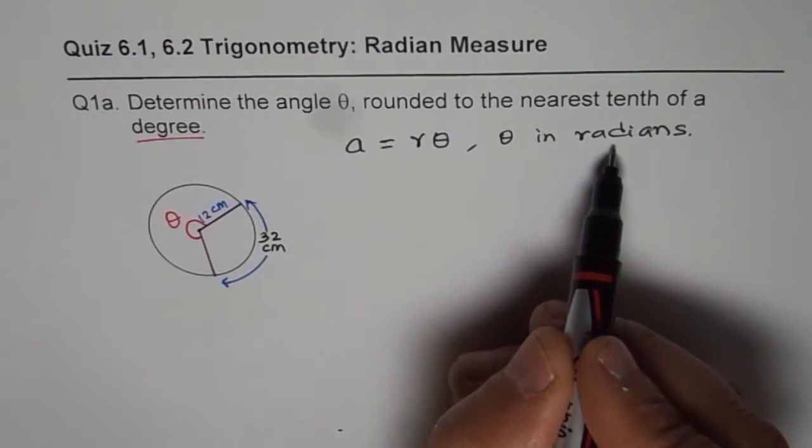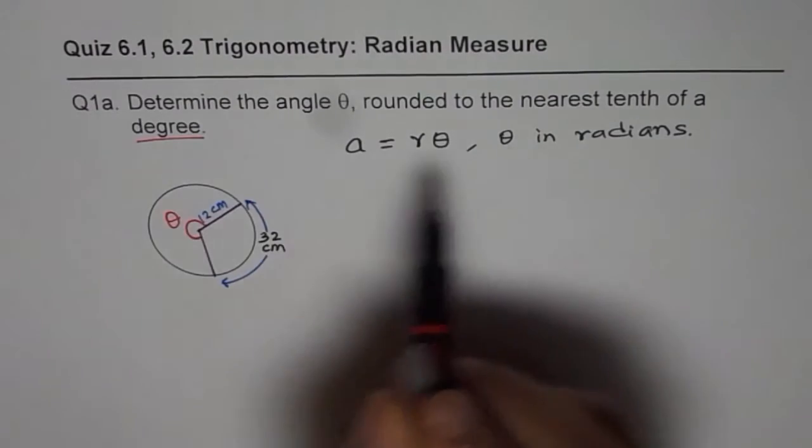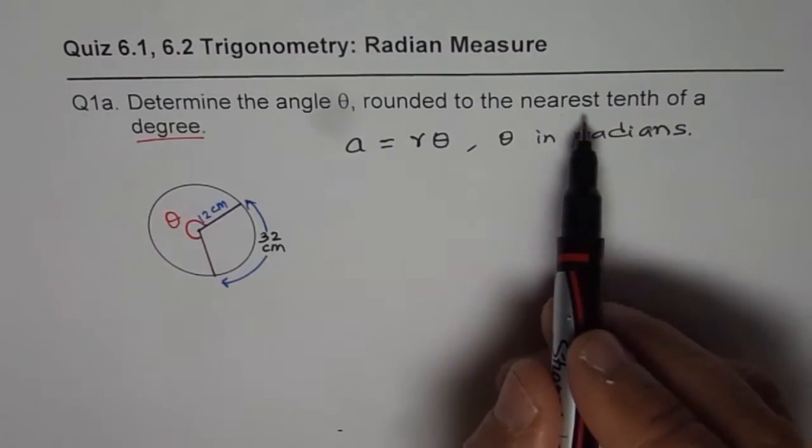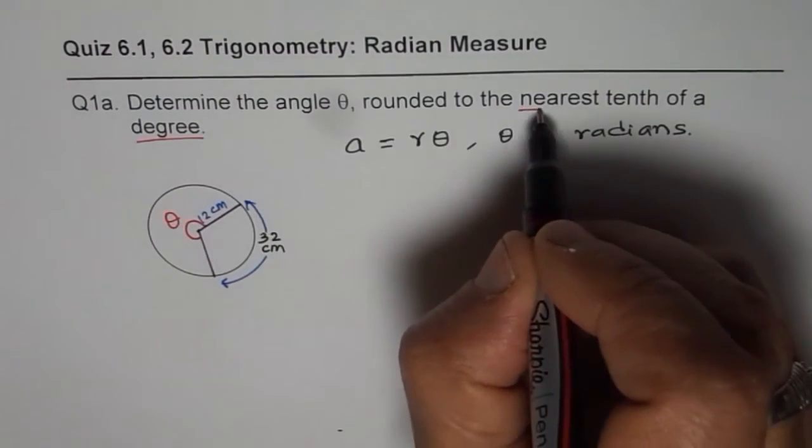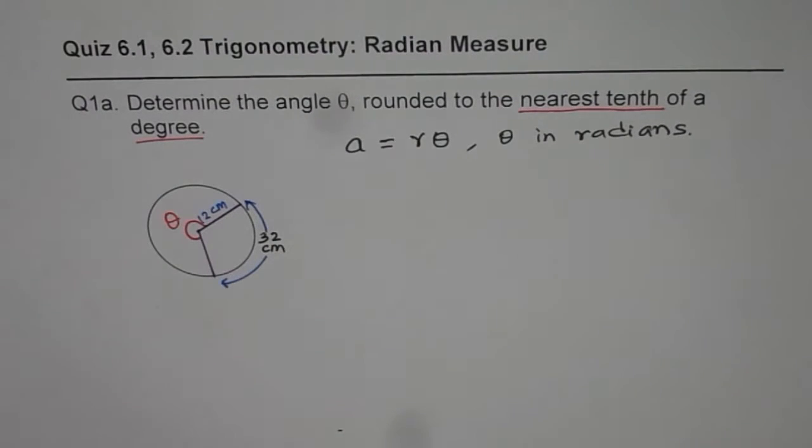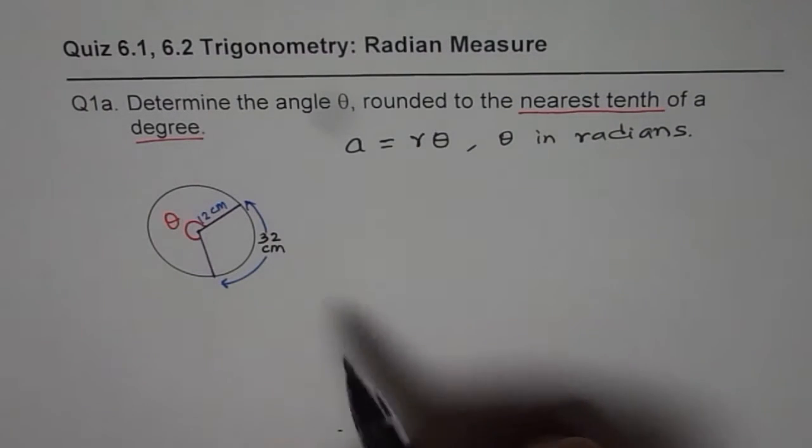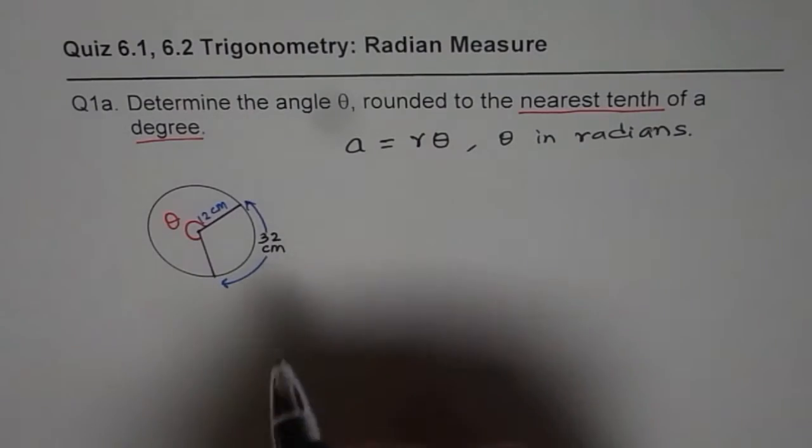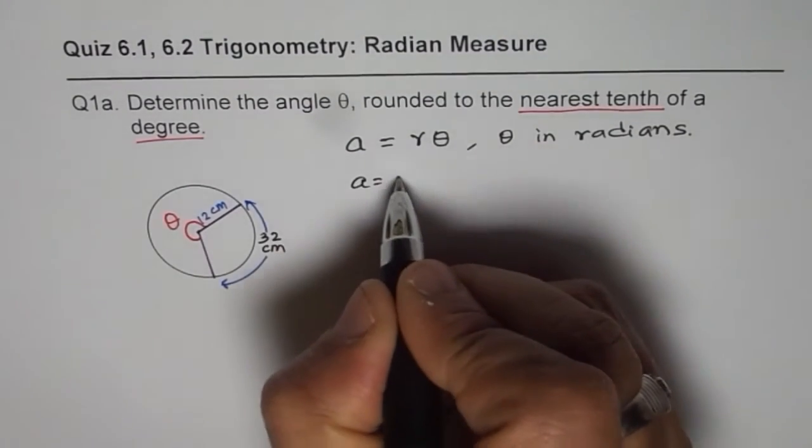will be in radians. You have to convert that to degrees and then round to the nearest tenth. That is the critical part and should not be overlooked. Otherwise the question is straightforward - we are given here arc length of